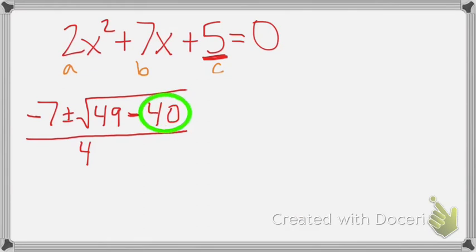This 40, always 4 times A times C. This 49 was B squared, so that was 7 squared.